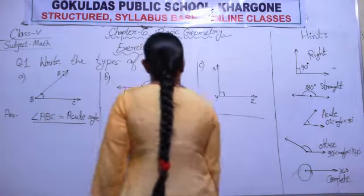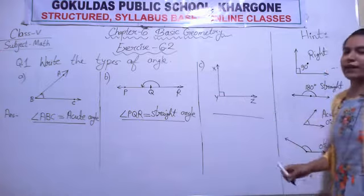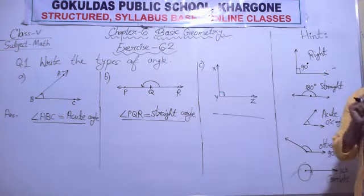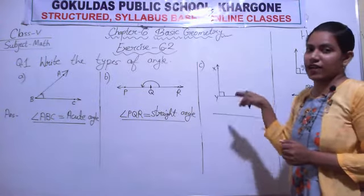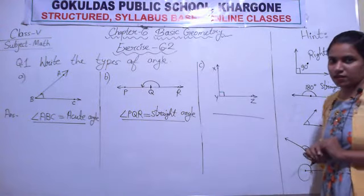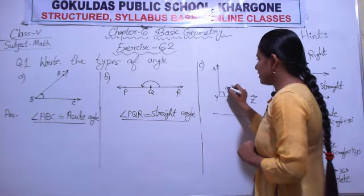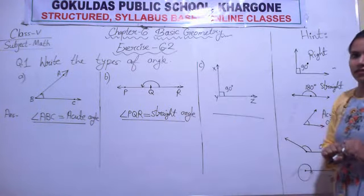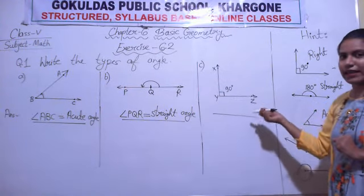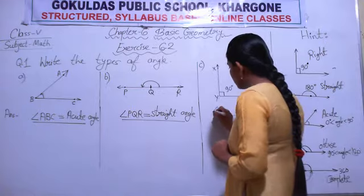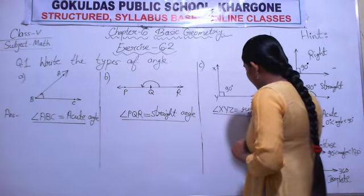Now identify the next one: two straight rays are perpendicular to each other, meaning their measure is 90 degrees. If two lines are perpendicular to each other they show a right angle. So angle X-Y-Z is a right angle.